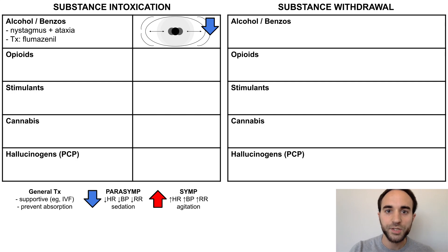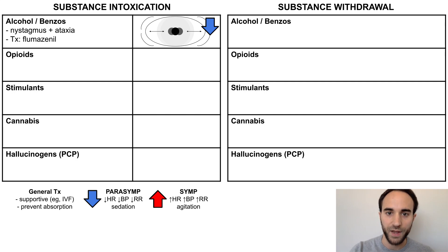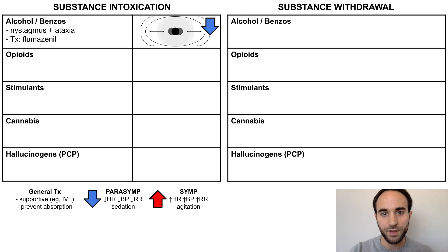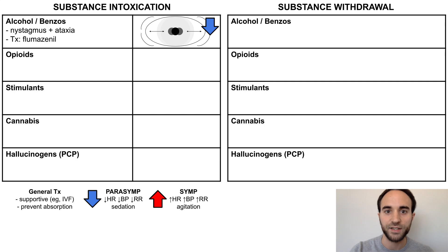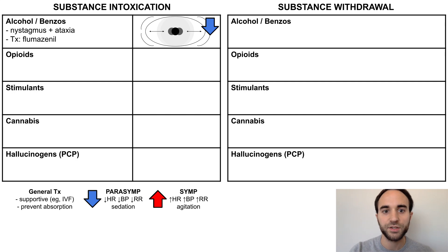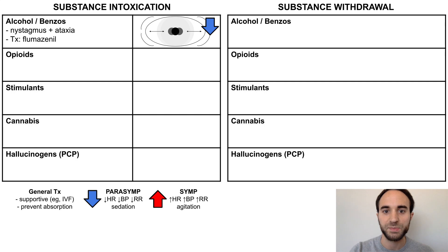The general treatment for any kind of substance intoxication involves supportive care, such as IV fluid hydration, and measures to prevent further absorption of the ingested substance, such as gastric lavage or activated charcoal. In addition to these measures, for benzodiazepine intoxication, the specific antidote is flumazenil.